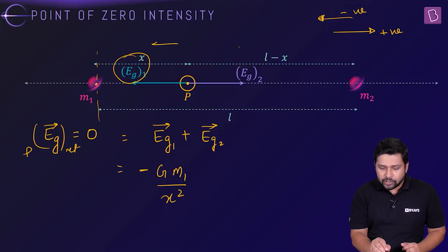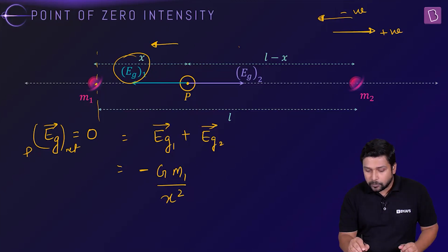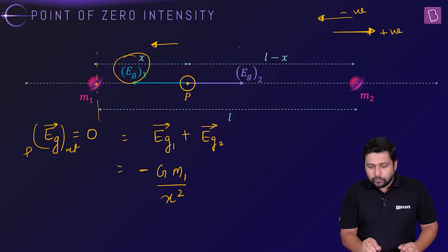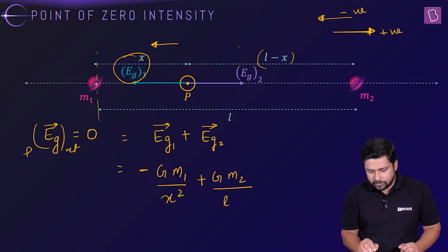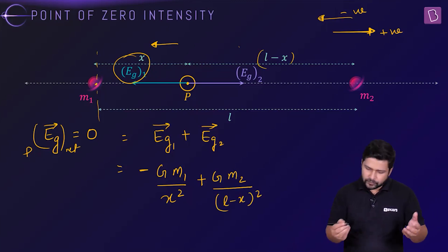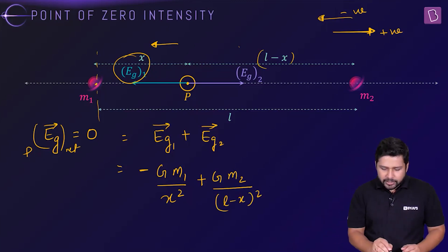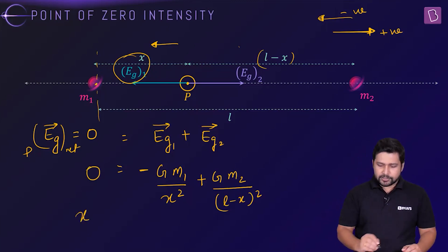EG1 is negative because the direction of the force and field are both in that direction, and we have chosen the positive direction as the other way. EG2 will be positive, and we can write G·M2 divided by (L minus x) squared. Just equate it to 0 and find the value of x.